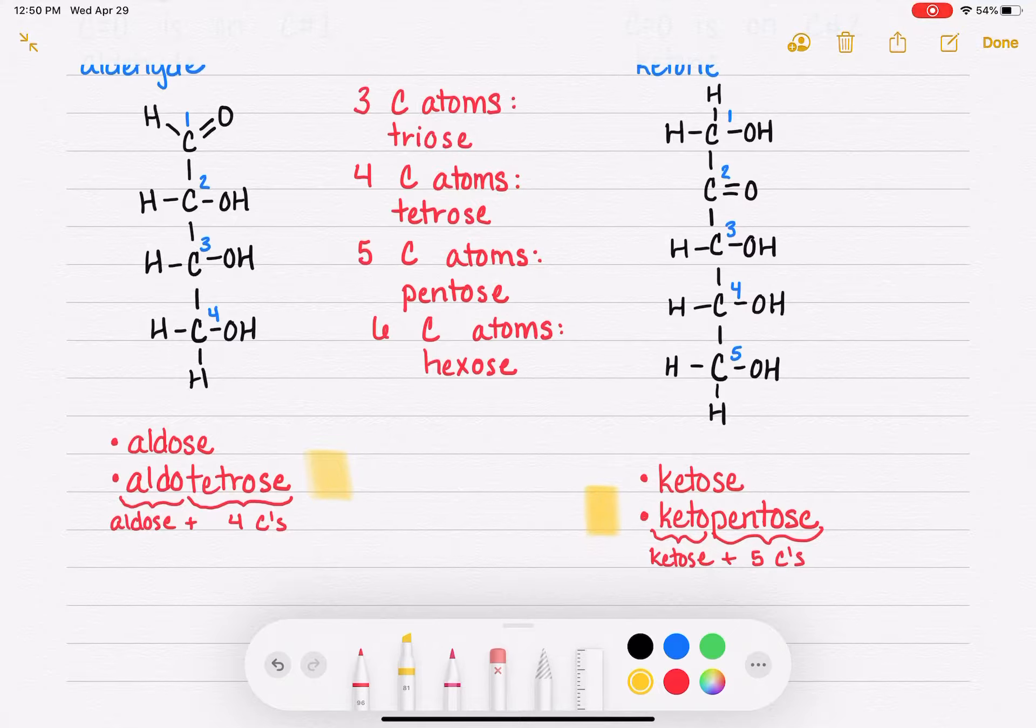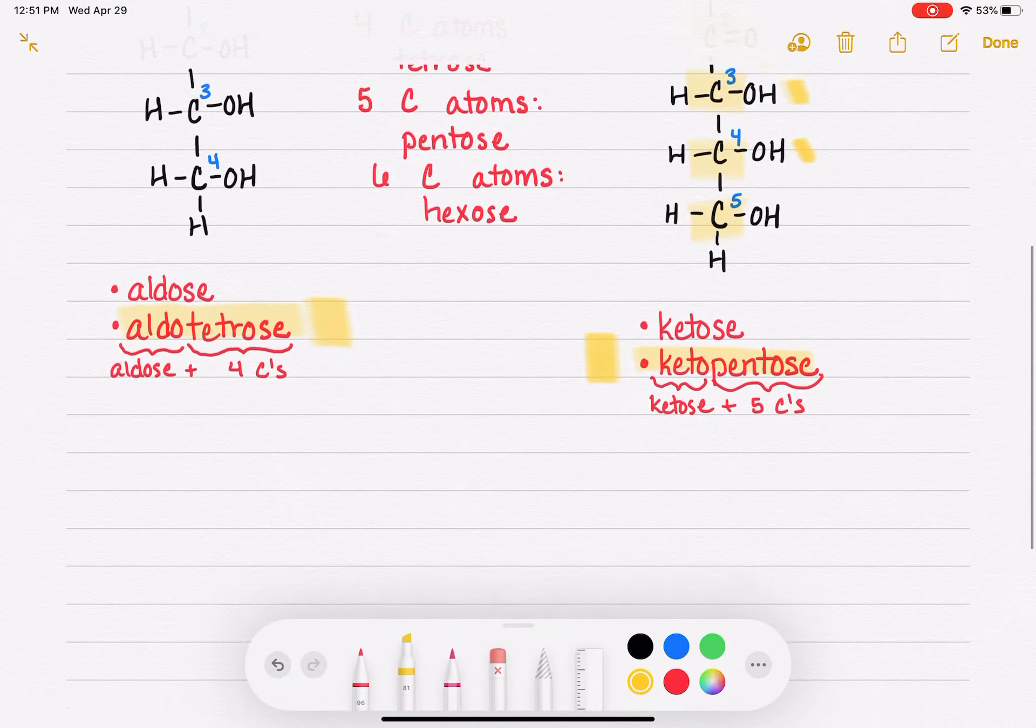So we can combine the aldose part and the number of carbon atoms part, and we get these names like aldotetrose and ketopentose. But even those names are not super specific because ketopentose, for example, is telling us that we have a five-carbon chain and that our carbon-oxygen double bond is on carbon number two. But it's not communicating anything about whether the OH groups on the other carbons are on the left-hand side or the right-hand side of the carbon chain. So that's what we're going to talk about next.